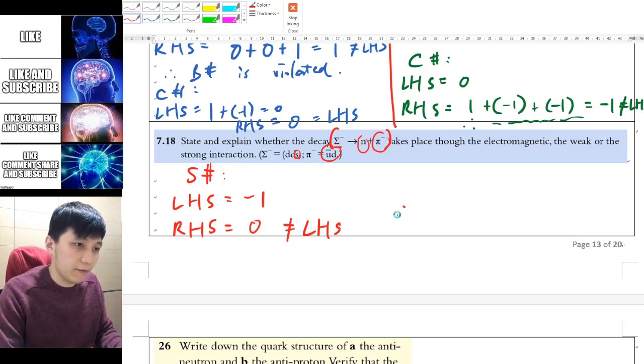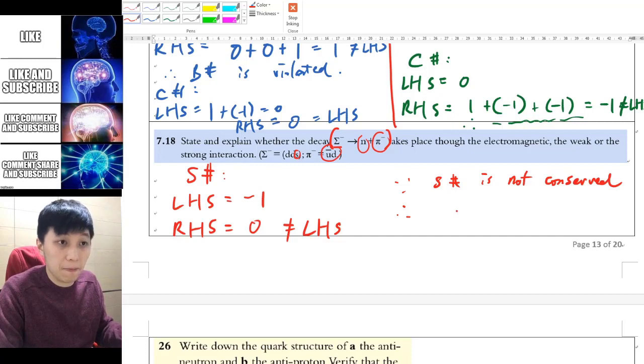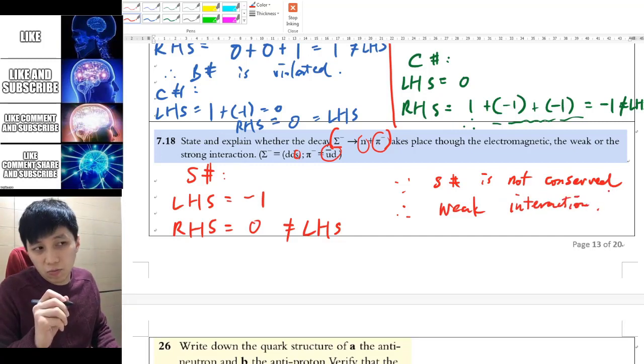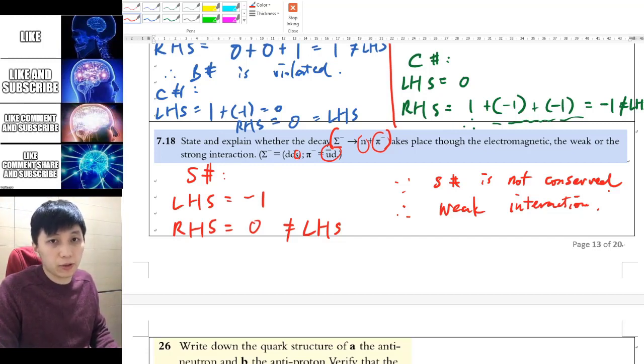And therefore, you may say, because strangeness is not conserved, you know that it must be weak interaction. And this is a very typical question in IB physics exams also.